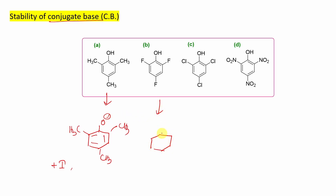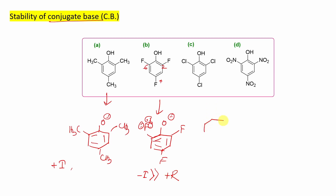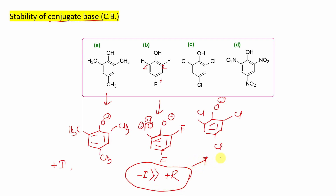Similarly, this is the phenoxide obtained from 2,4,6-trifluorophenol. Here, fluorine exerts a −I effect. Fluorine also has a +R effect because the three lone pairs present on each fluorine atom can be donated to the benzene nucleus. But for halogens, the −I effect dominates over the +R effect. The same explanation is applicable for 2,4,6-trichlorophenol as well.